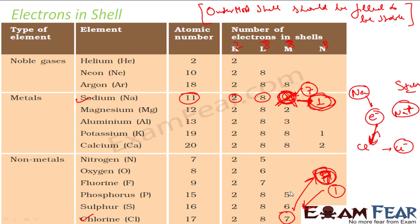We will study more in detail when we study the periodic table — why sodium, potassium, and calcium behave the way they do, and which is more reactive even when they all have 1 element in the outermost shell.